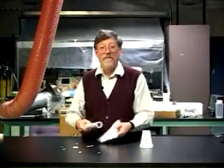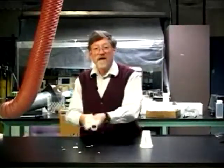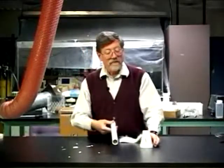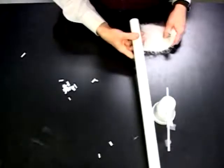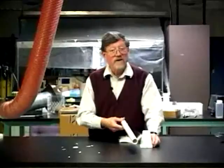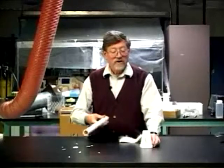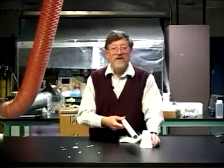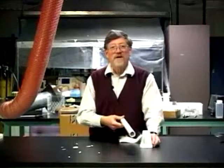I can rub the tube again and bring it near the pointy and blunt tapes on my test stand. We notice that the tube attracts the pointy tape and repels the blunt tape. So this behaves like another blunt tape and we could say that the tube had blunt charge.